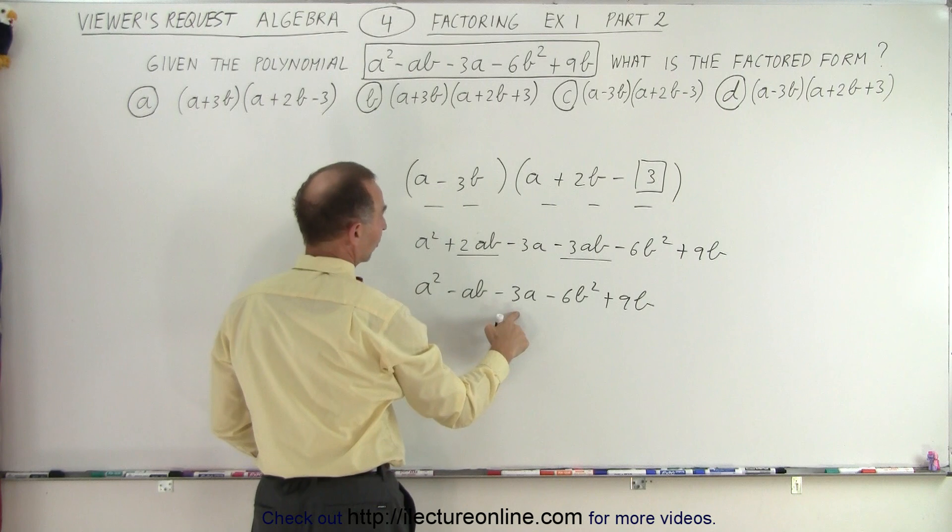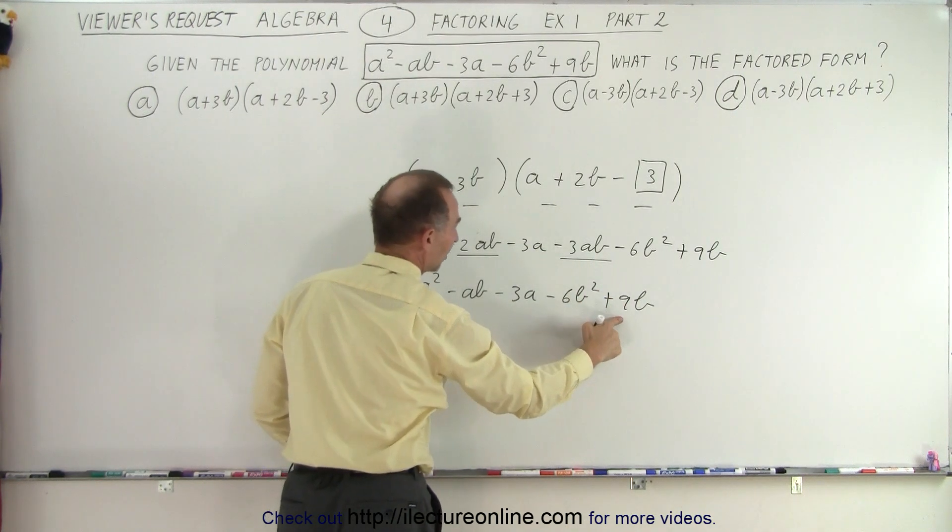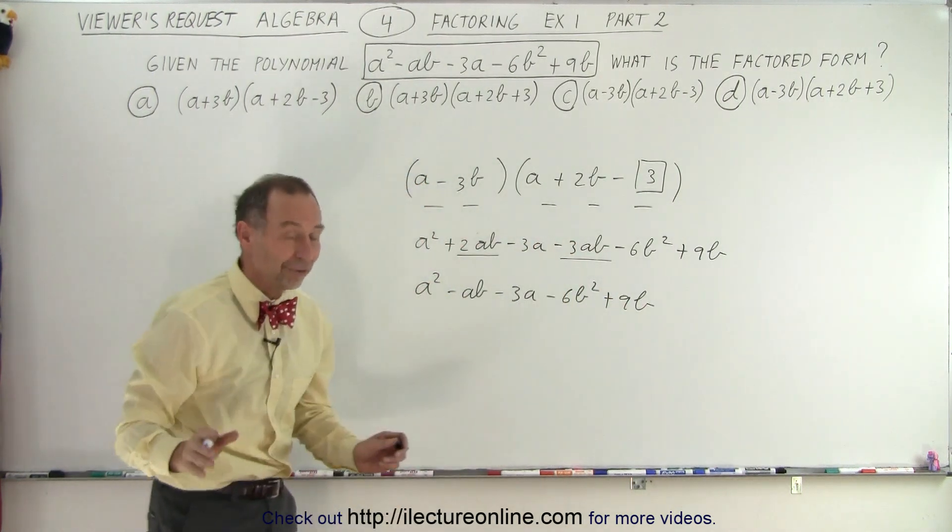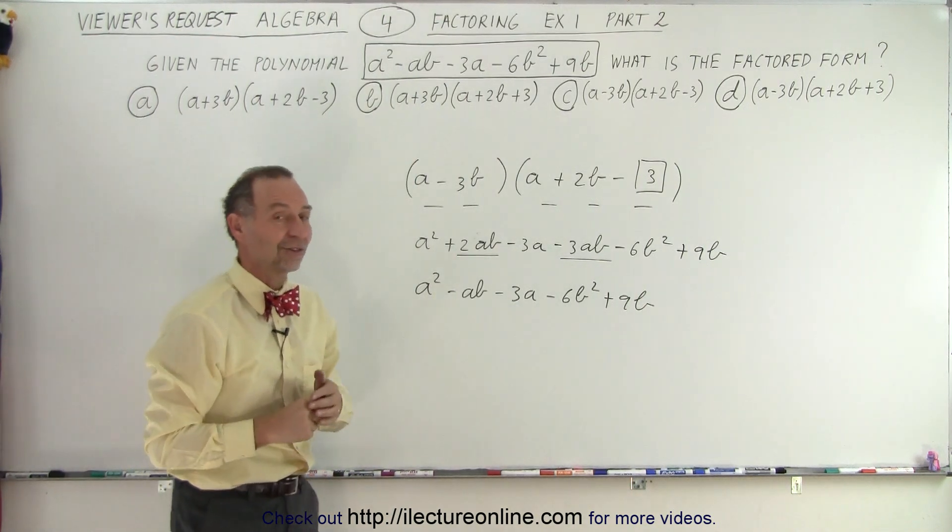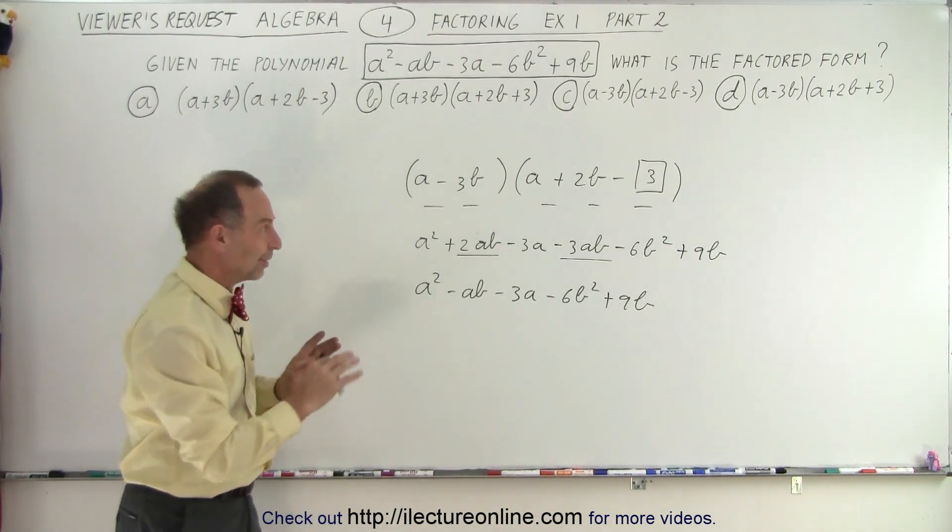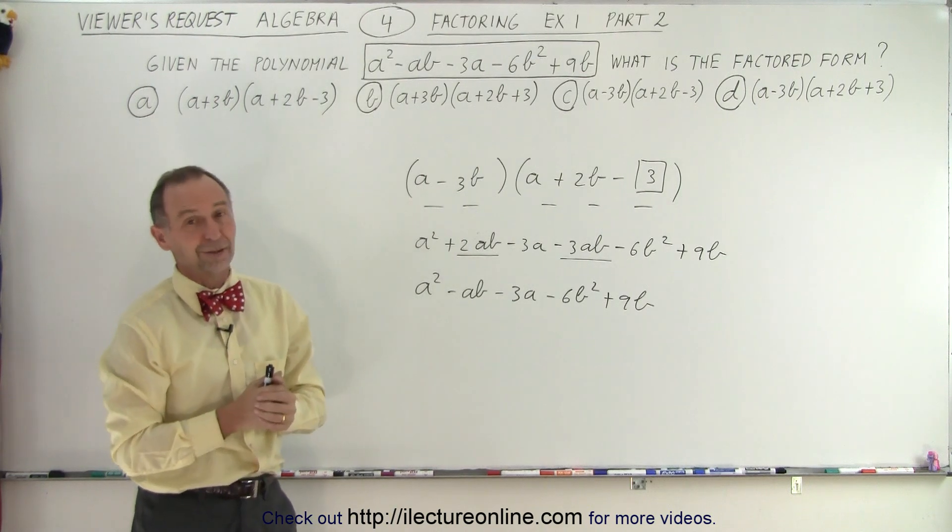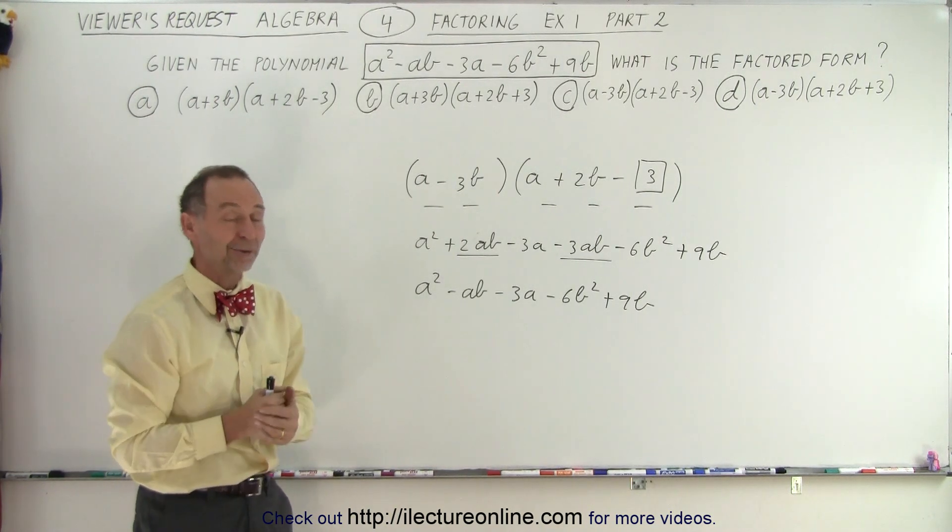A squared minus a b, minus three a, minus six b squared, plus nine b. And that is correct. So I verified that I got the correct answer. And sure, I got the same answer as I did in the previous video when I used the quick shortcut method to find the right answer. And that is how it's done.